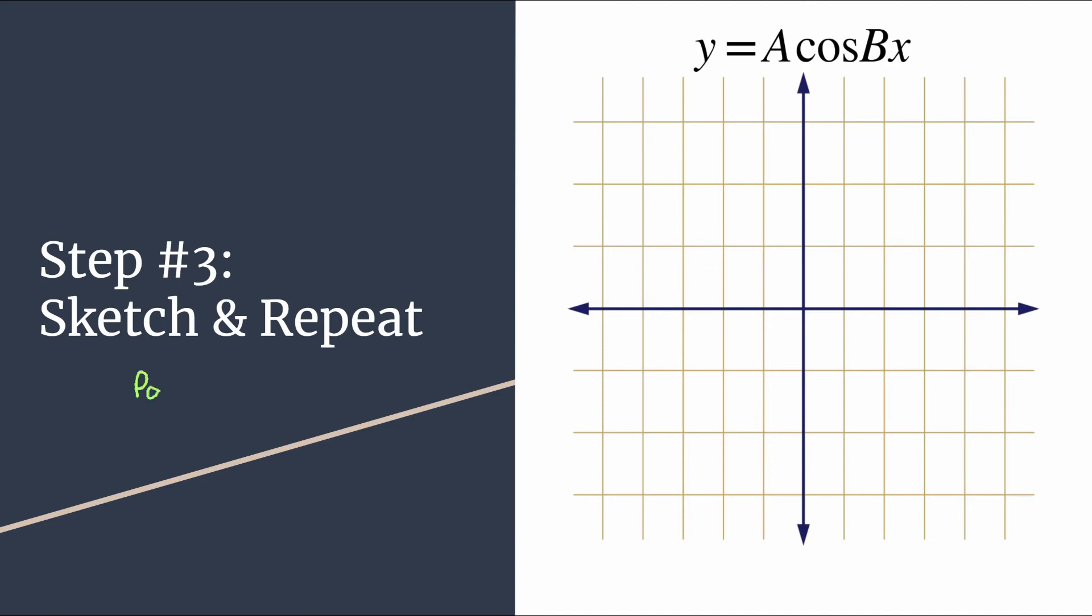So we know the period of this graph should be two pi over B. So that's how long it should take to complete one cycle. And thus I think it's helpful to go ahead and say, okay, well, that means that my fourth tick mark, which is where my repeat should start. That will be two pi over B.